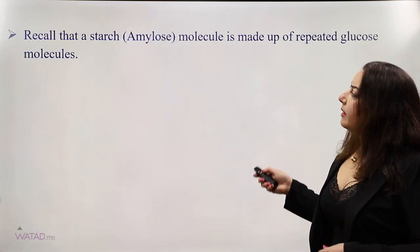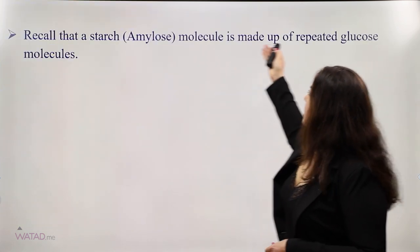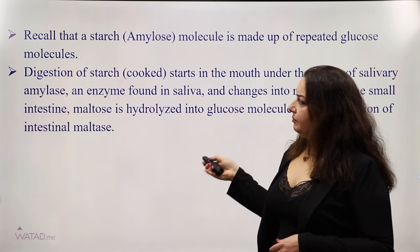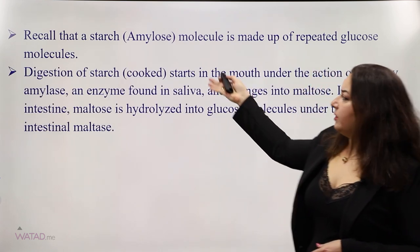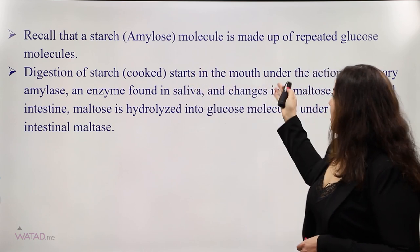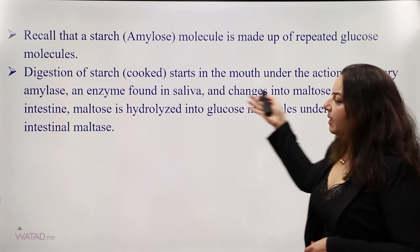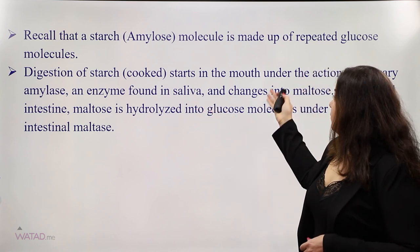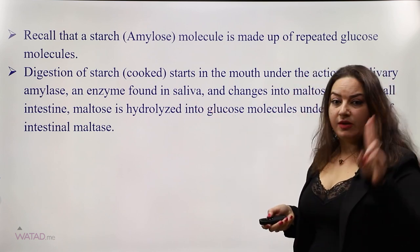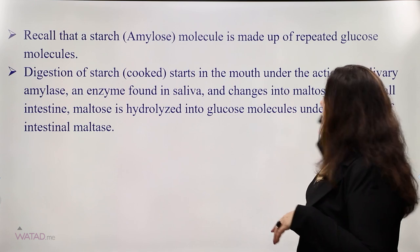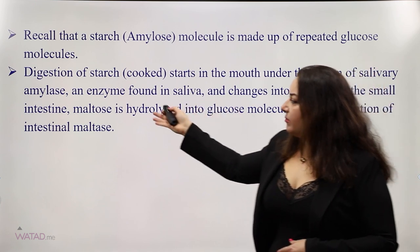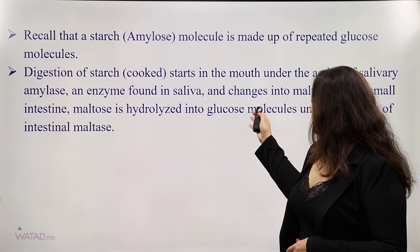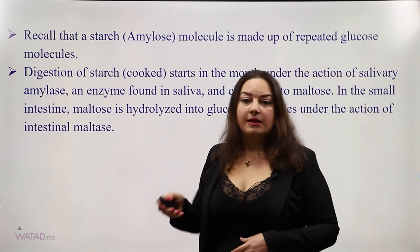Recall that starch, or amylose, is made up of repeated glucose molecules. Digestion of cooked starch starts in the mouth under the action of salivary amylase, an enzyme found in saliva, which changes starch into maltose — a disaccharide. In the small intestine, maltose is hydrolyzed or broken down into glucose molecules under the action of intestinal maltase.